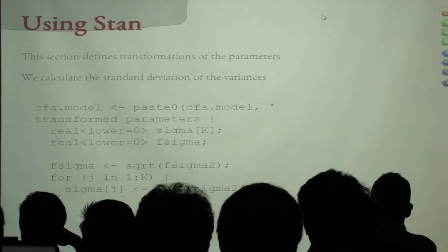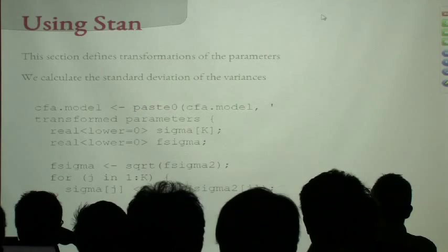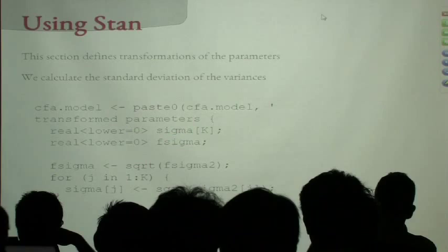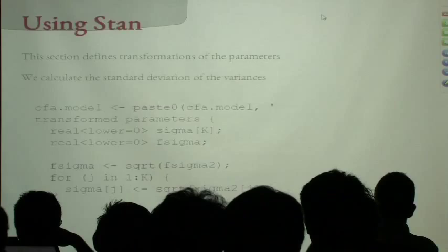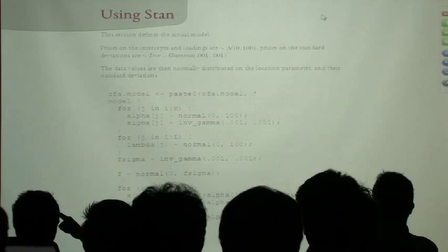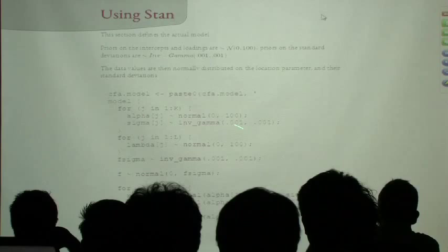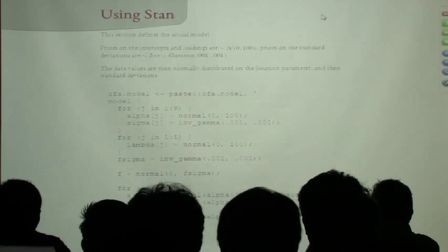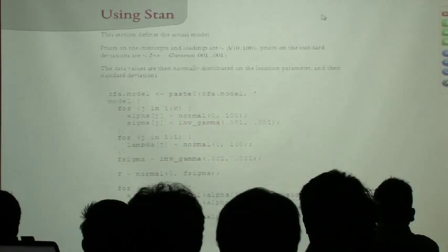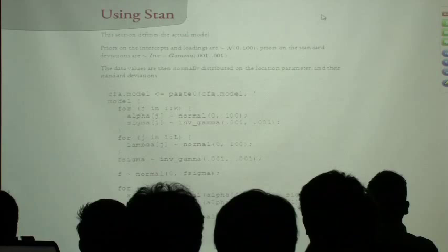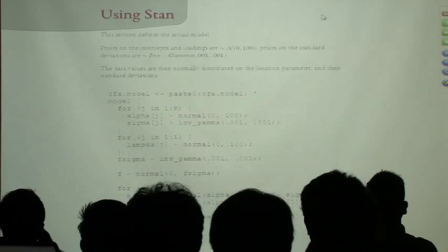One nice thing about STAN compared to JAGS: the normal distribution is parameterized in terms of standard deviation or variance rather than precision — which is how 99% of the world thinks about it. The syntax is very similar to JAGS. You can extract parameters and print them — the alpha vector, lambda vector, residual variances, and factor variance — and see their posterior means and summaries.